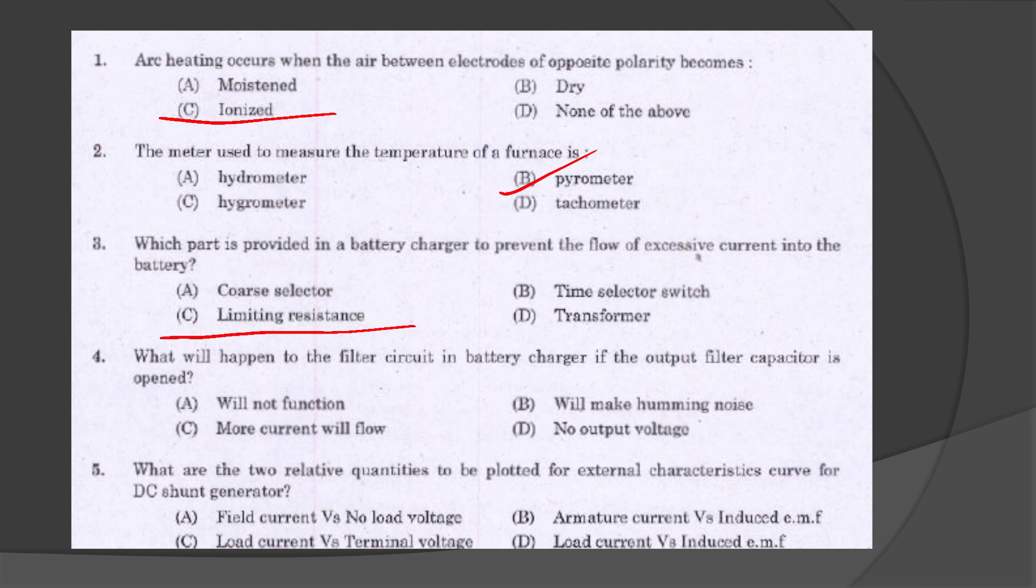Which part is provided in a battery charger to prevent the flow of excessive current into the battery? What will happen to the filter circuit in the battery charger if the output filter capacitor is opened?